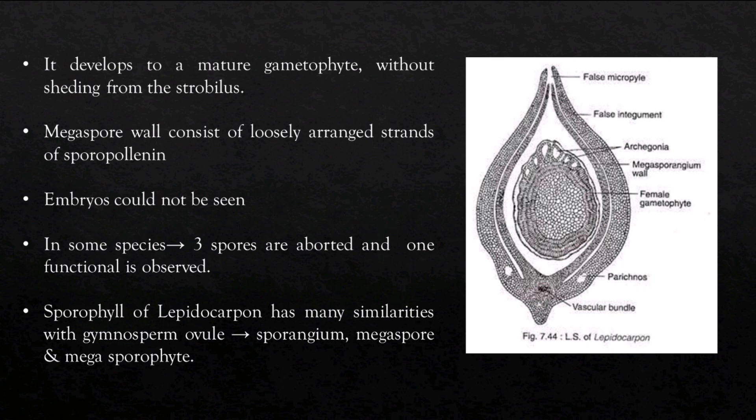The most distinct feature is the presence of a single functional megaspore. This functional megaspore develops into a mature gametophyte without being set free from the strobilus. The megaspore wall consists of loosely arranged strands of sporopollenin. Embryos could not be seen. In some species, out of four spores, three spores are aborted and one functional spore is observed.